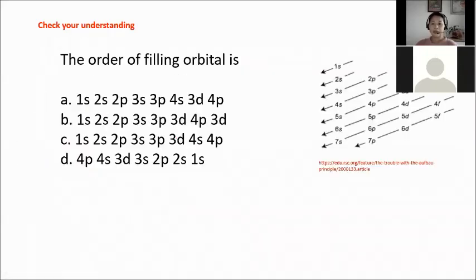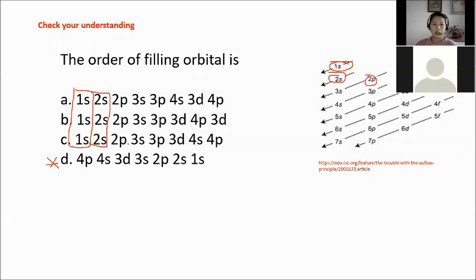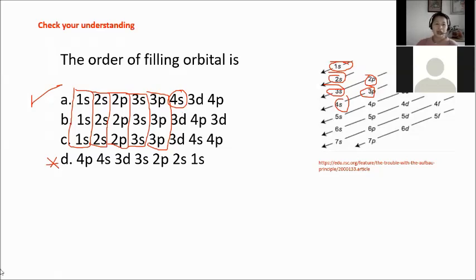The order of filling orbitals follows the Aufbau principle: 1s, 2s, 2p, 3s, 3p, 4s — 4s comes before 3d. Among the choices, the correct order is 1s, 2s, 2p, 3s, 3p, 4s.